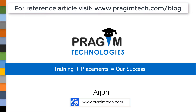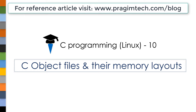This is part 10 of the C Tutorial Series. I am Arjun. In today's session, we will discuss C object files and their memory layouts. It is very important to know the sections and segments of these object files in order to understand how internally scope and lifetime of variables work. We will also understand concepts such as storage class specifiers clearly if we have a minimum knowledge of these object files.